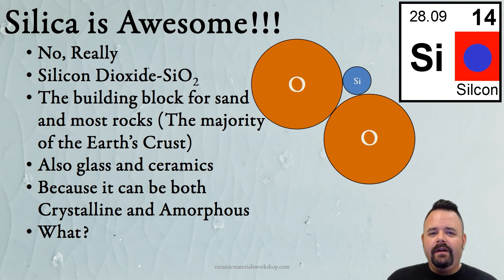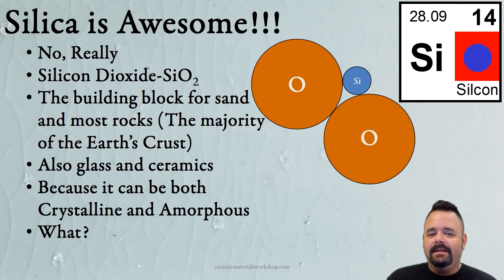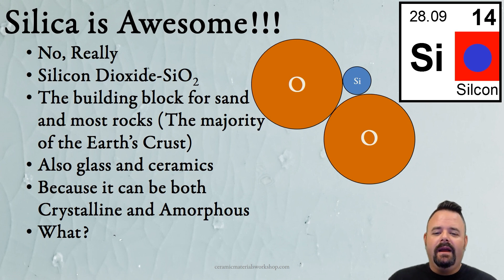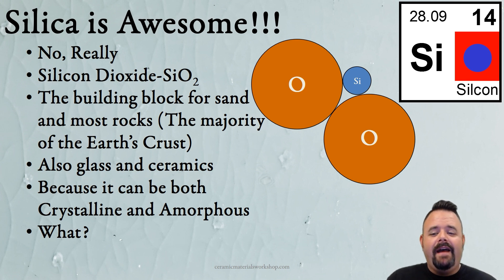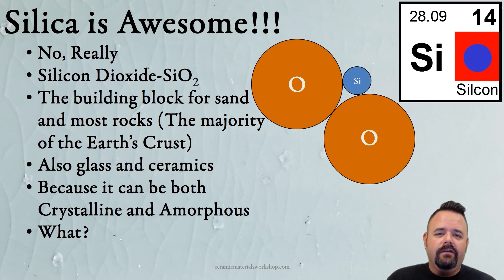Silica is amazing because it's everywhere. Underneath your feet right now, wherever you're sitting, is silica — and there's probably silica next to you, over you, and around you. It is everywhere. It's the building block for sand and basically every rock out there, or the vast majority of rocks. It's the number one element in the earth's crust.